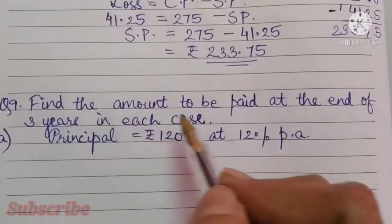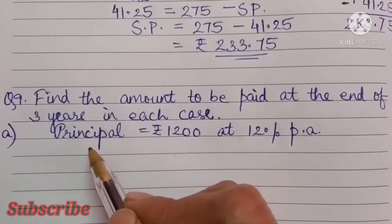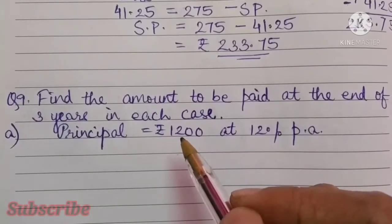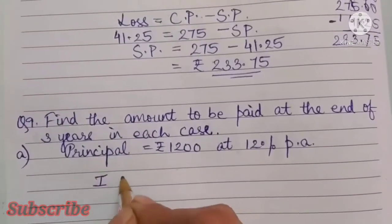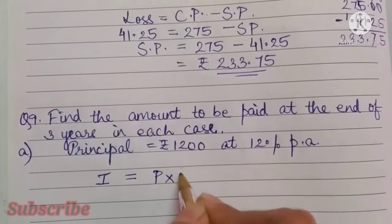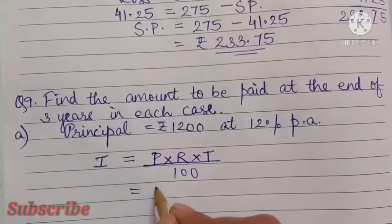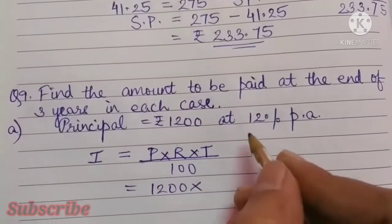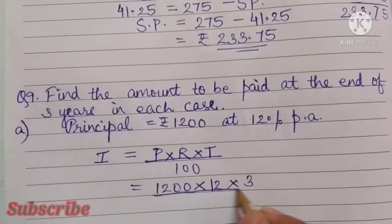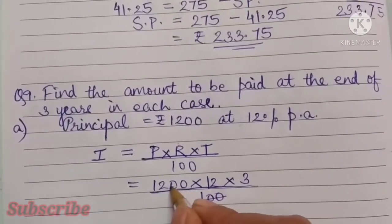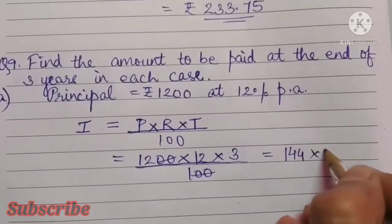Next question: Find the amount to be paid at the end of 3 years in each case. Part A: principal is given as 1200 and the rate of interest is 12%. We have to find the amount. So first, interest is equal to P into R into T by 100. Here P is 1200, R is 12%, T is 3 years, divided by 100. These two zeros get cancelled.